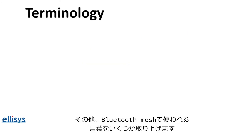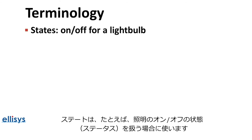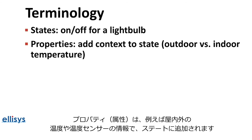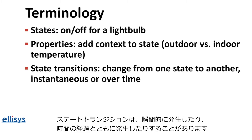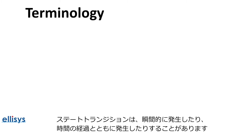Here is some other terminology used in Bluetooth Mesh. States — for example, on and off states in a light bulb. Properties, which add context to a state, such as outdoor versus indoor temperature in a temperature sensor. And state transitions, which define the change from one state to another — these can happen either instantaneously or over time.